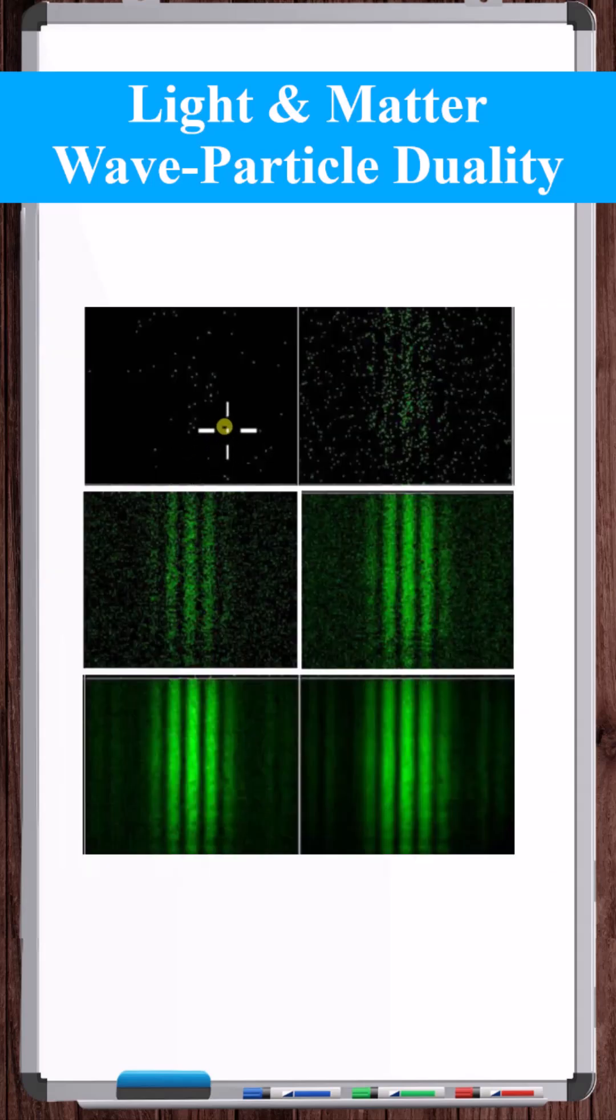Points of light hit the detector plate one at a time. Continuing to pass through more and more of these particles of light, the same interference pattern developed. The photons of light were seemingly interfering with themselves.